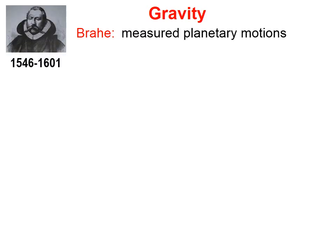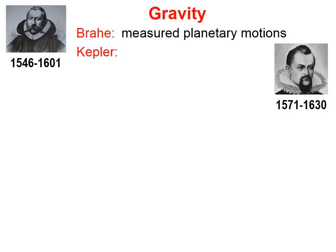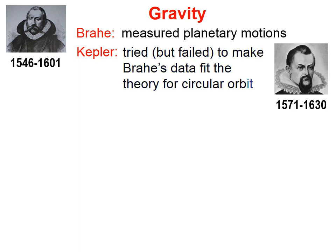The story of Kepler's Three Laws of Planetary Motion begins with Tycho Brahe. Brahe, over a long period of time, measured the orbits of planets, took data on the positions of planets, and recorded them. Kepler obtained Brahe's data and tried, but failed, to make that data fit the theory for circular orbits.